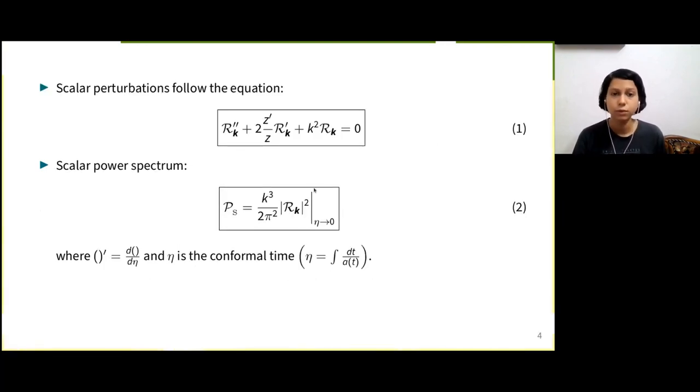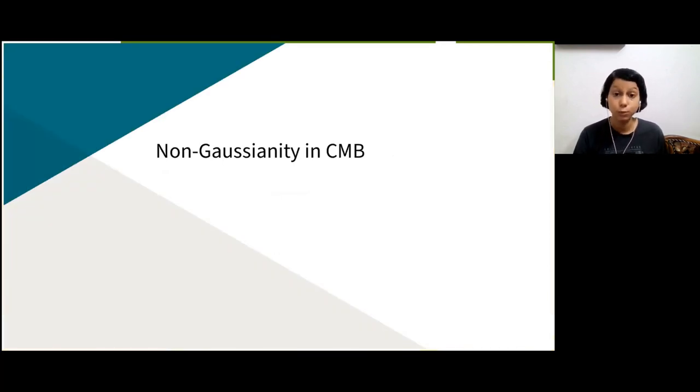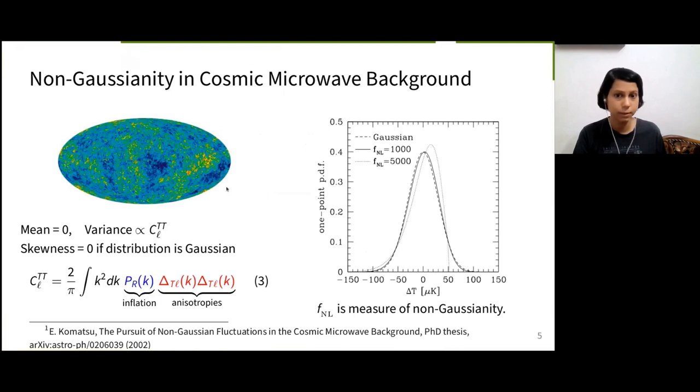The scalar perturbations follow equation 1, where rk is the Fourier transform of r. If we compute the two-point correlation of the curvature perturbation rk, we get power spectrum given in equation 2. Now, how do we connect this power spectrum to the observable at hand, that is the cosmic microwave background, shortly called CMB?